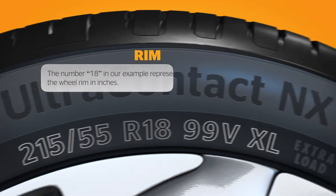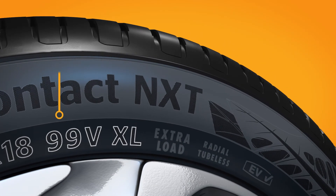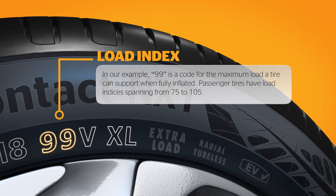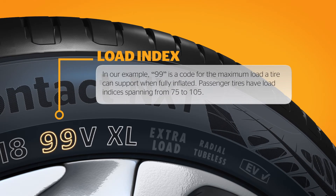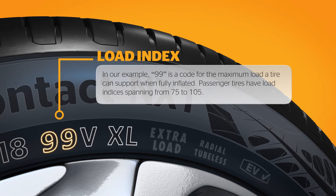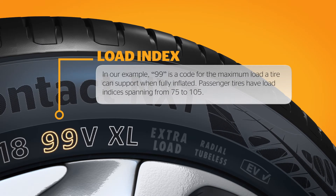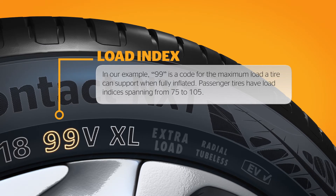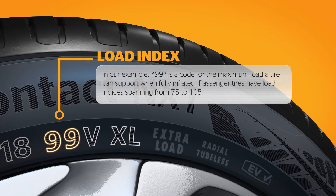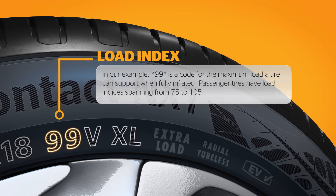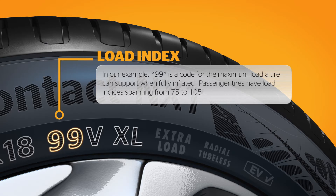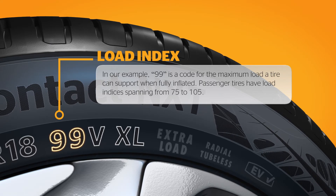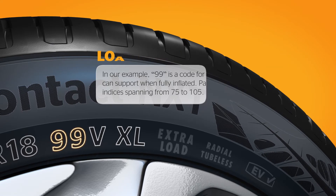In our example, 99 is a code for the maximum load a tire can support when fully inflated. Passenger tires have load indices spanning from 75 to 105. The carrying capacity for each value is described in a load index chart in your vehicle or tire documentation.